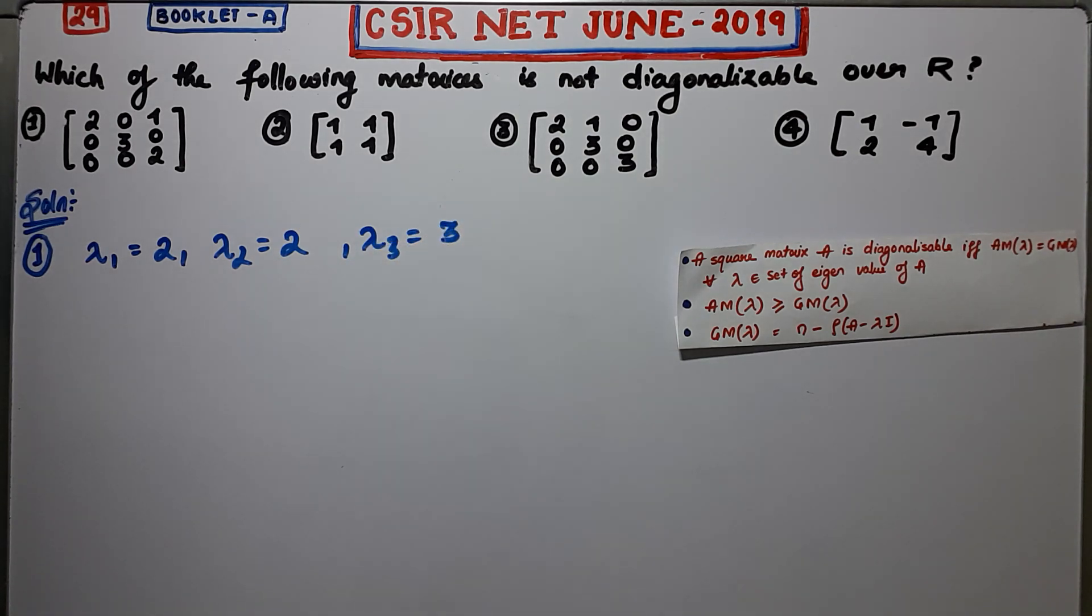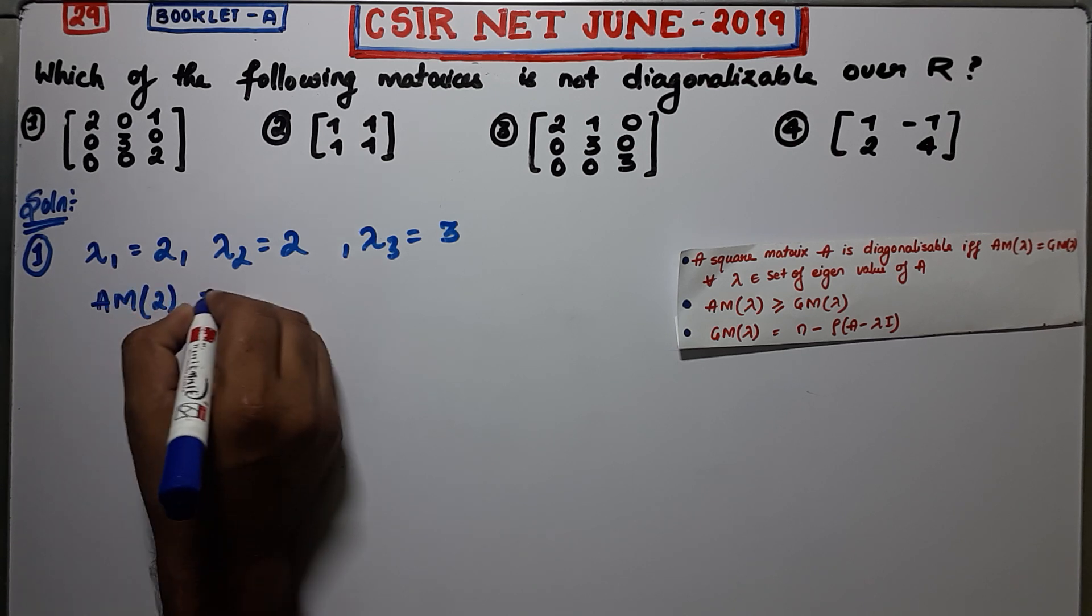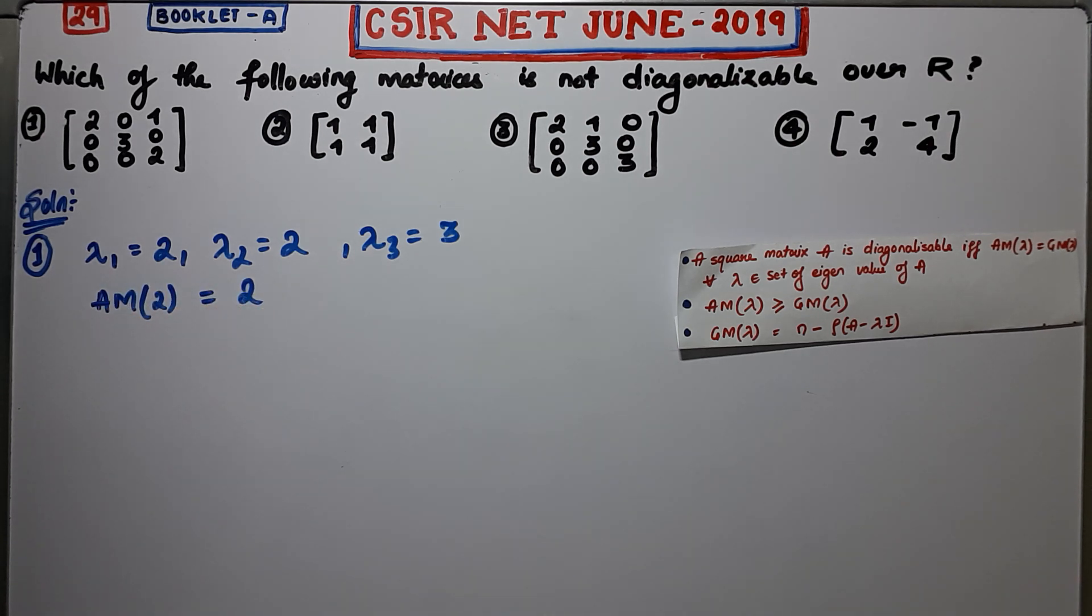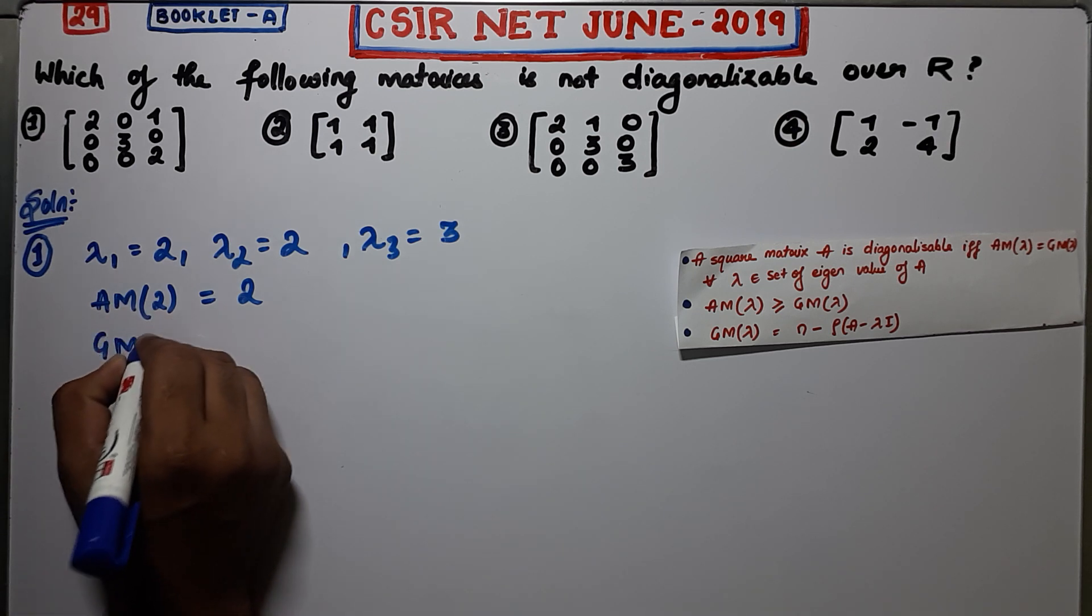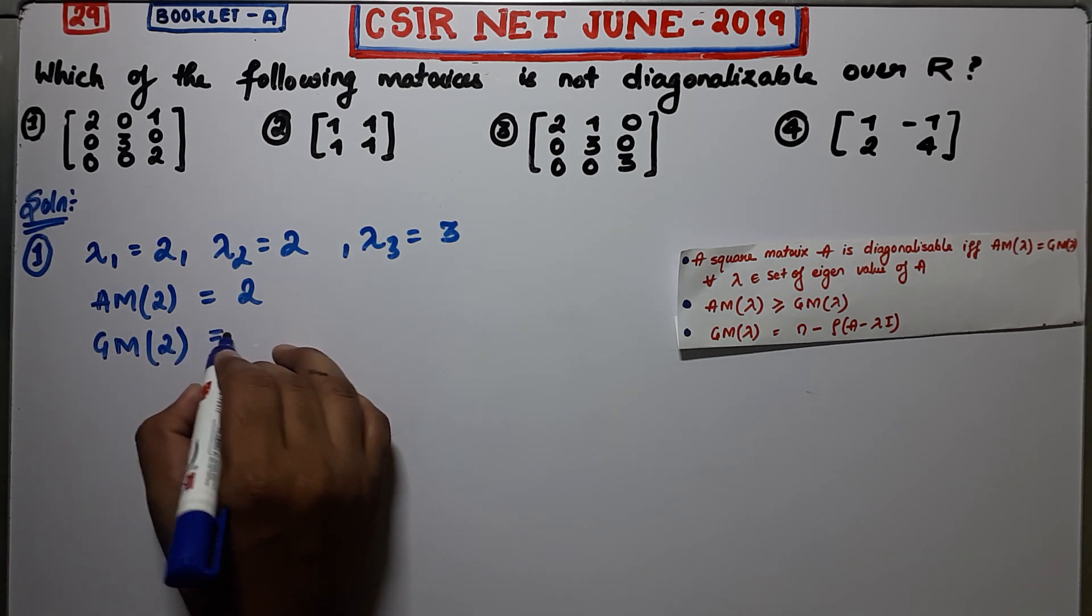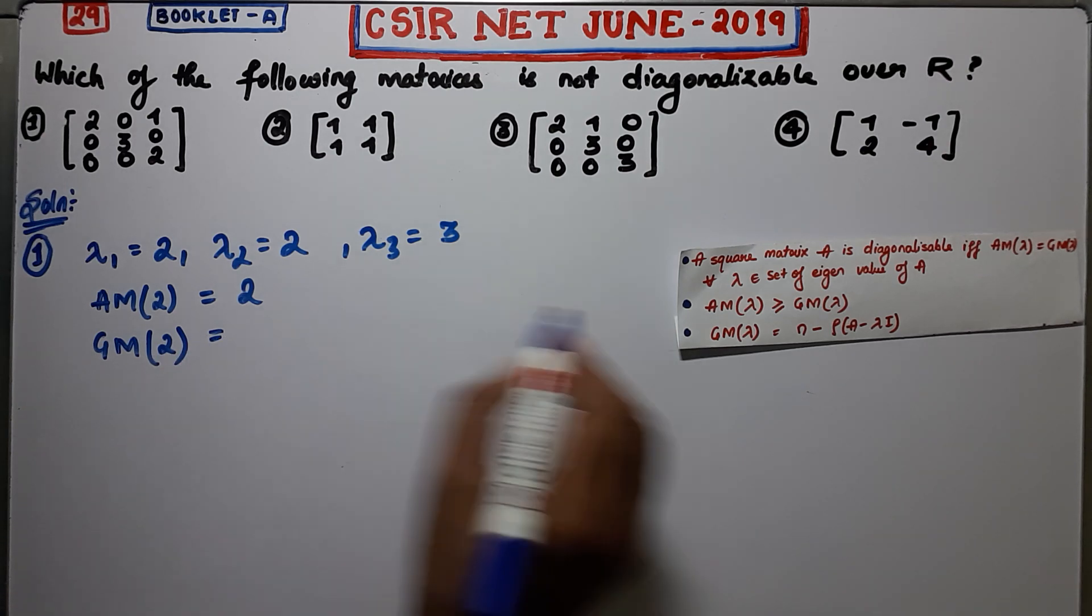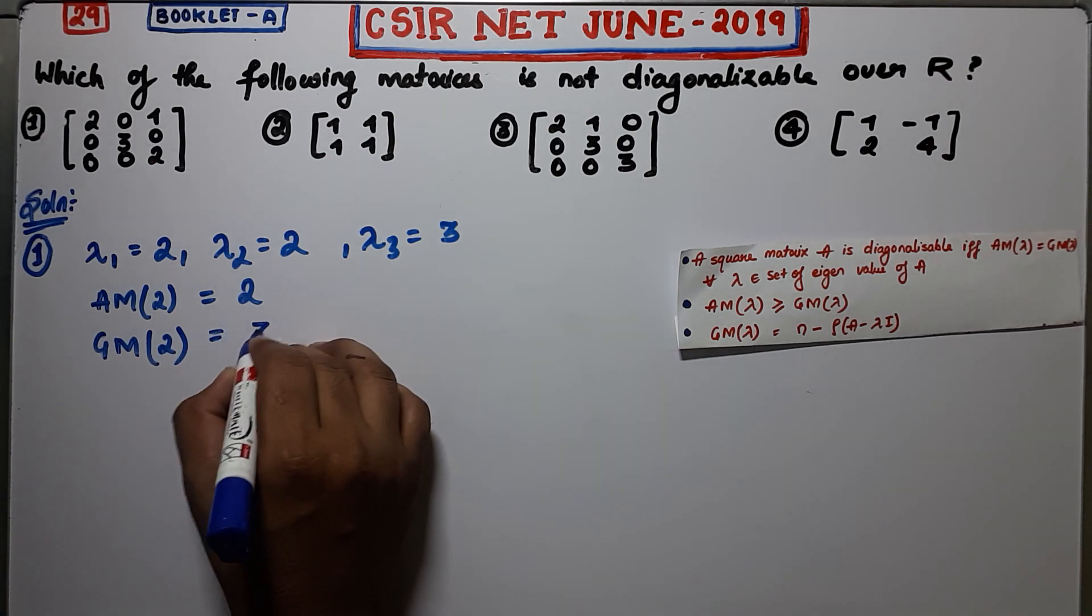Now you have an eigenvalue 2 which has algebraic multiplicity 2. So what I will do is find the geometric multiplicity of this eigenvalue 2. The geometric multiplicity of 2 will be given by this formula: 3 minus rank of A minus 2I.